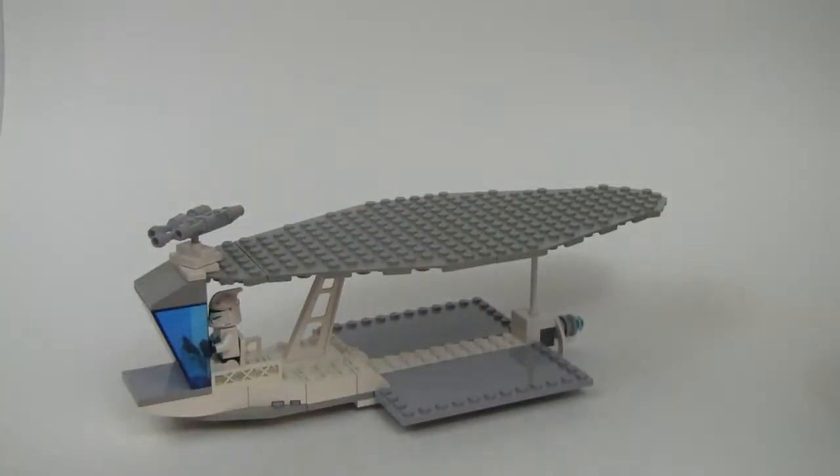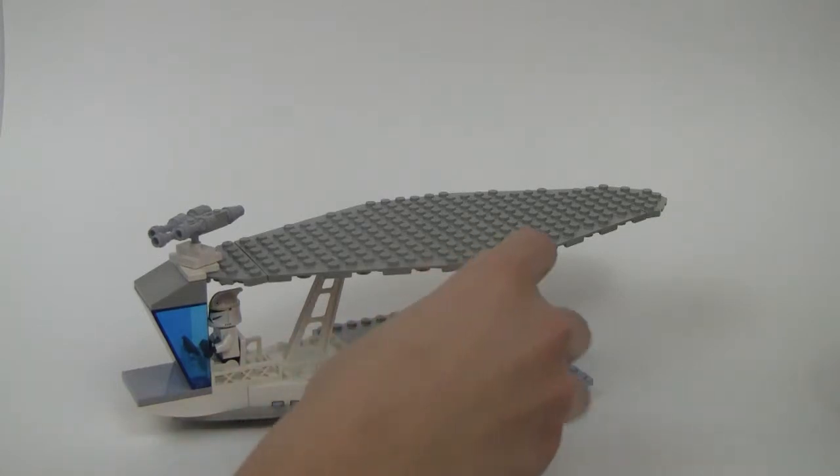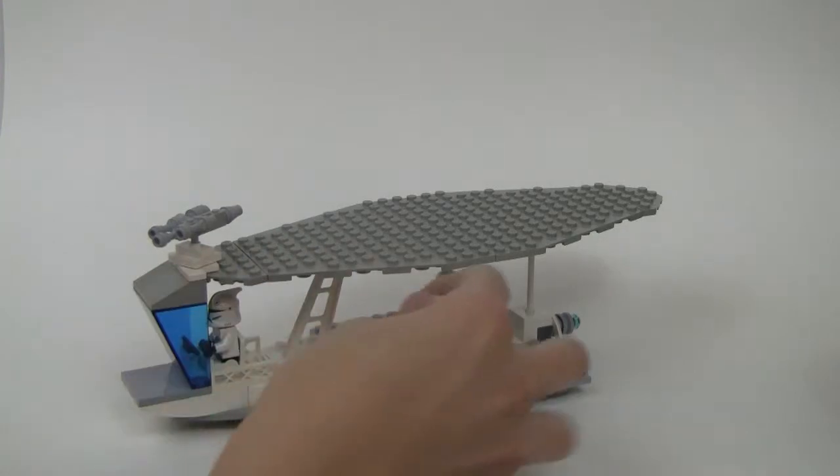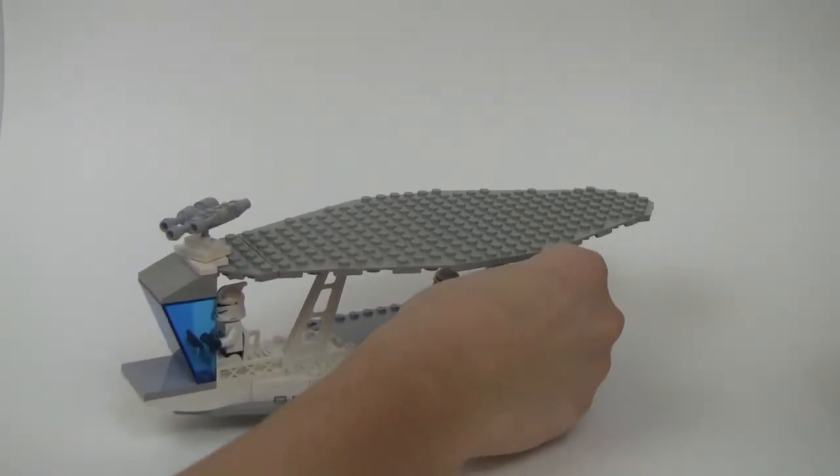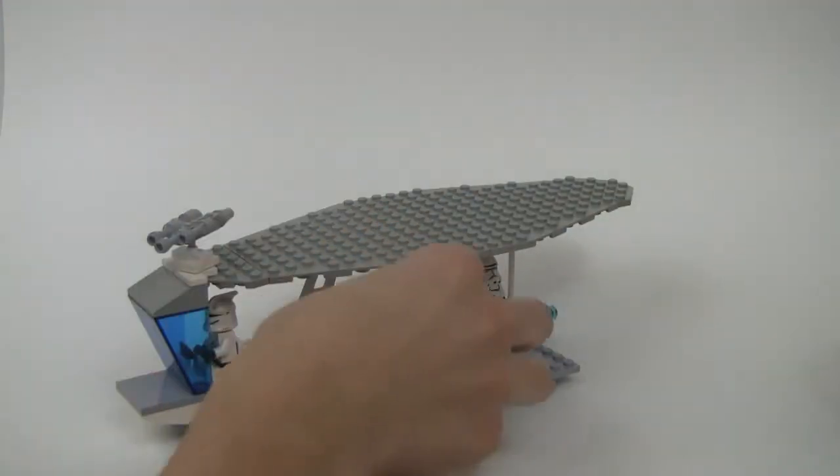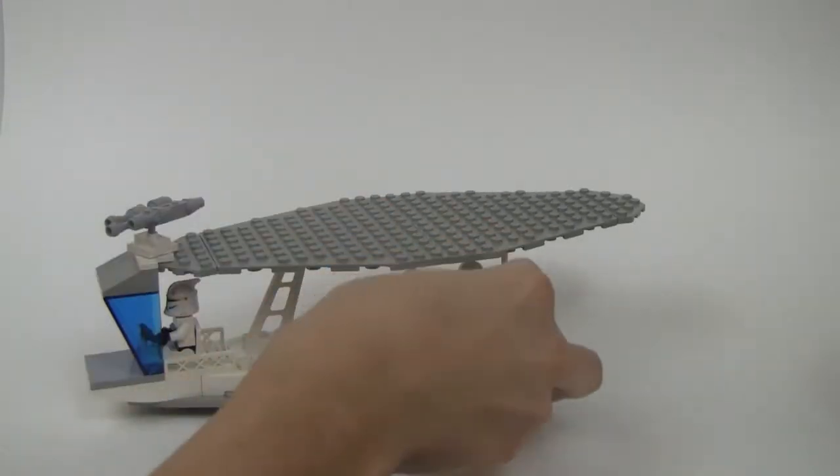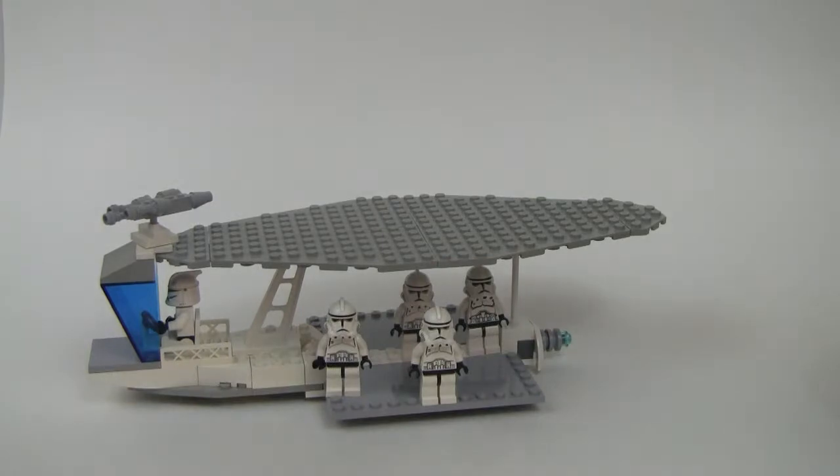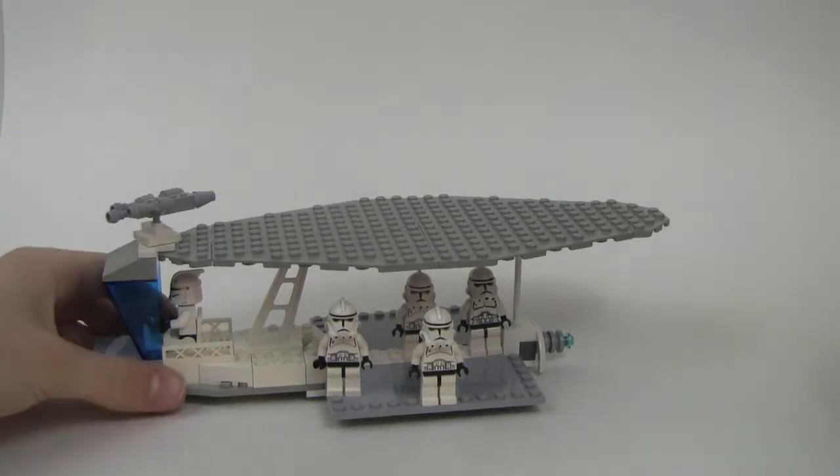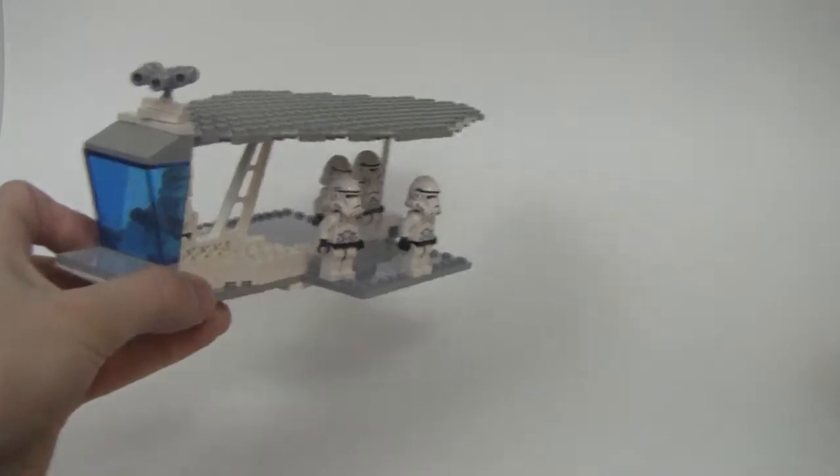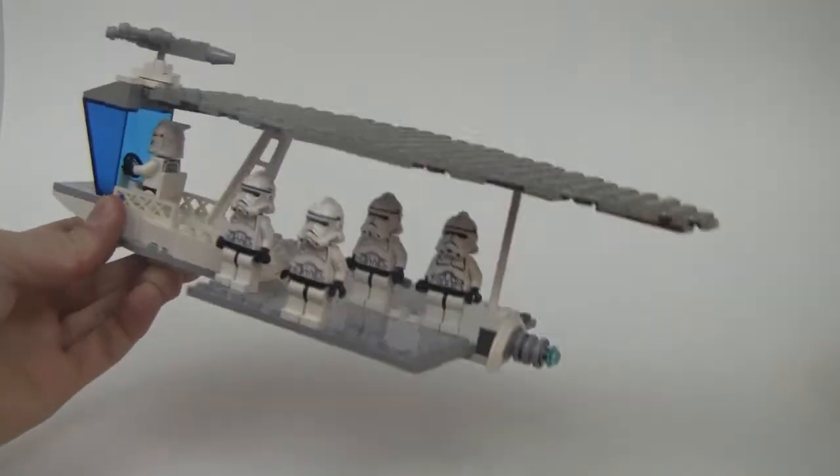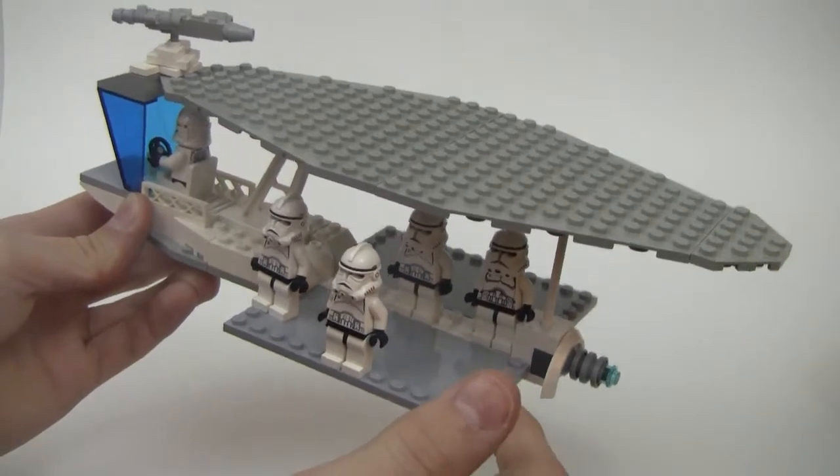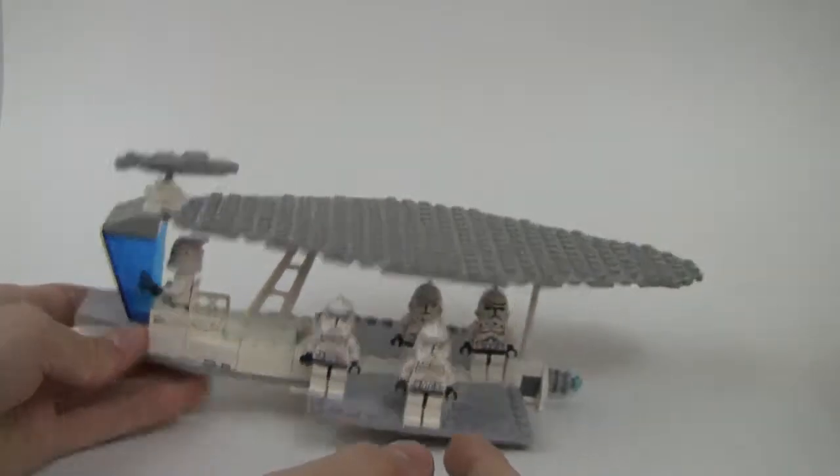I'm just going to put some troops. They can either stand in this part underneath. You can fit a good number of minifigs on here. Just put four in there for now. So there you can see what it would look like going through the city. You can even put some speeder around here if you wanted to, or just a little command unit.